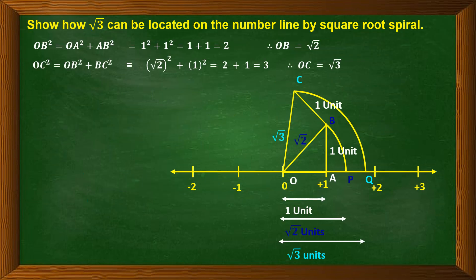We can locate √3 on the number line using the square root spiral only after we locate √2. So first, we mark a point O at 0 and another point A at 1, so OA is 1 unit. At A, we draw a perpendicular equal to 1 unit, which is BA. We join BO to get a right angle triangle OAB, where OB is the hypotenuse — the longest side, opposite the 90-degree angle. We use Pythagoras theorem to find the value of OB.